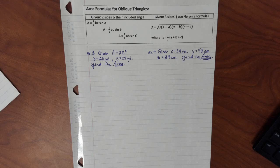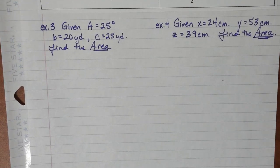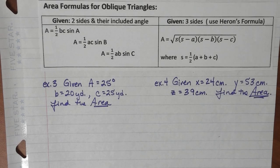Welcome back to part two of the law of cosines. In this particular part we're going to talk about finding the area of a triangle, specifically an oblique triangle. I know you can do a right triangle and you can do a triangle if you know the height using one half the base times the height.